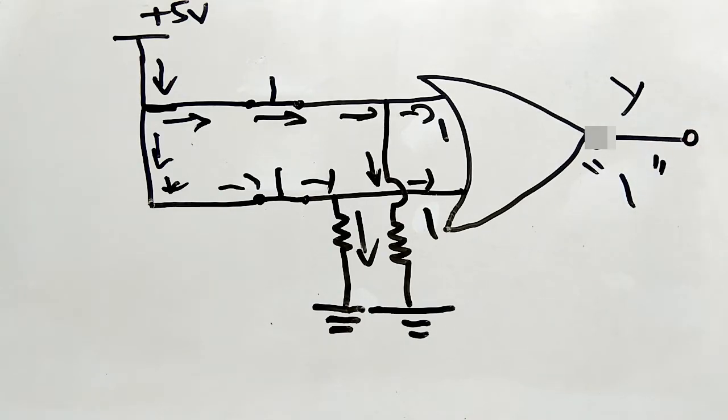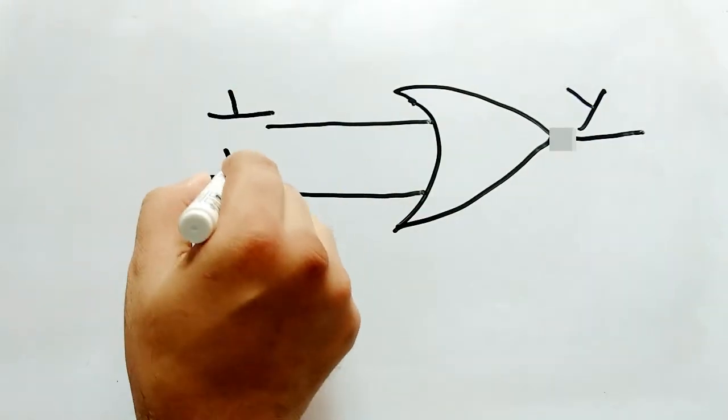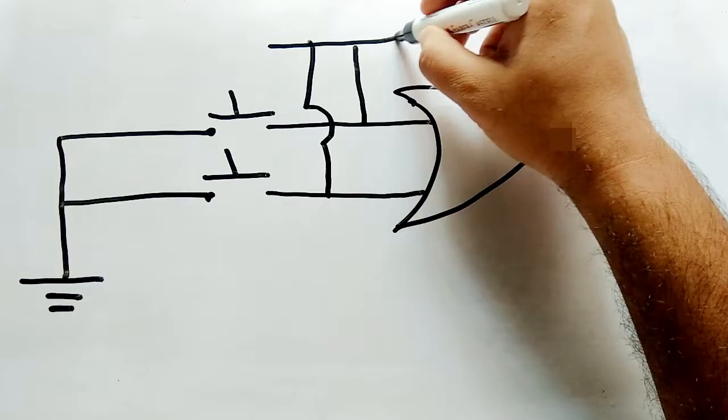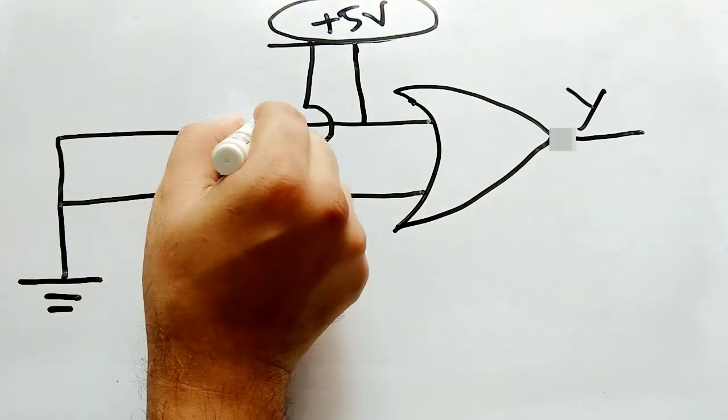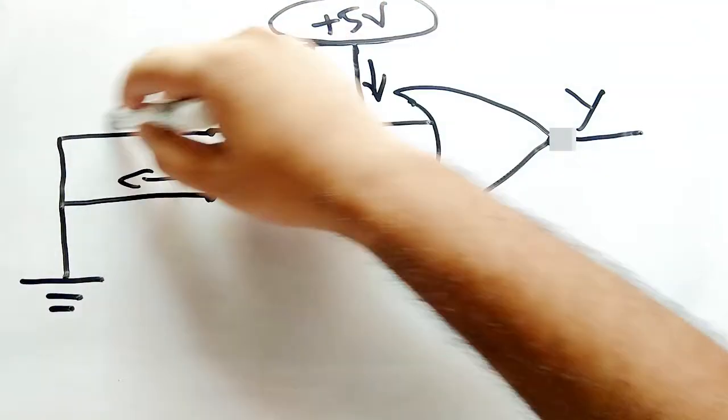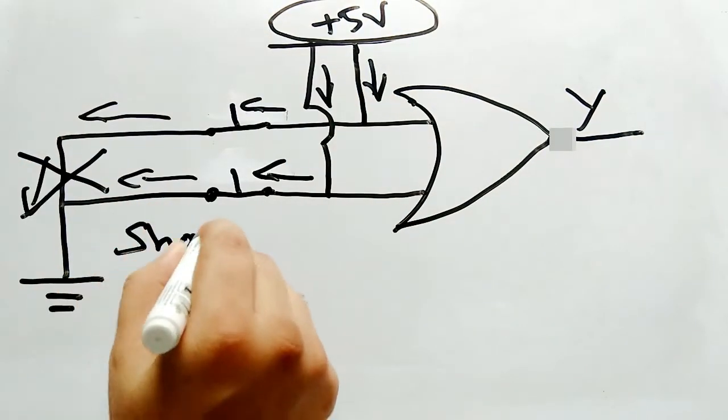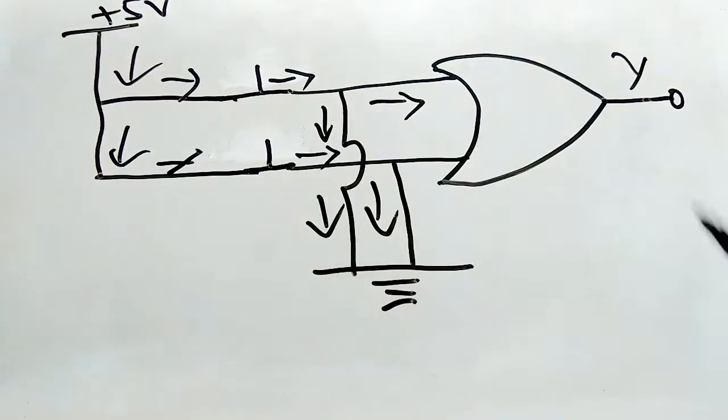In case if you are wondering why should we add the resistor in the first place, why can't we connect the pins directly to plus VCC, let me tell you it's a bad idea. Connecting the input pins to plus VCC will work, but when the switch is closed it's gonna create a short circuit and you don't want that to happen. The similar thing happens when you miss out the pull-down resistors as well.